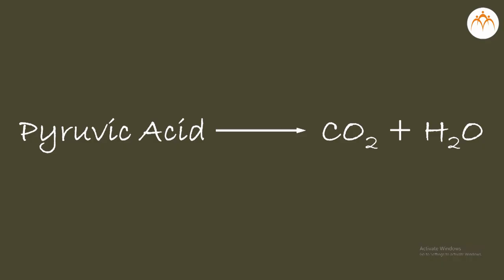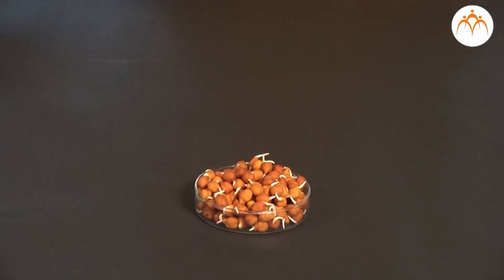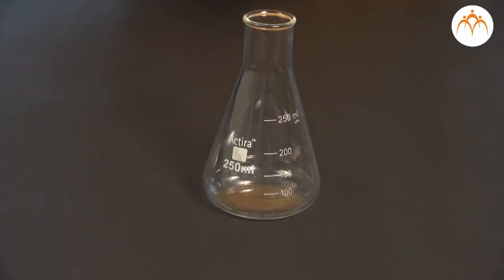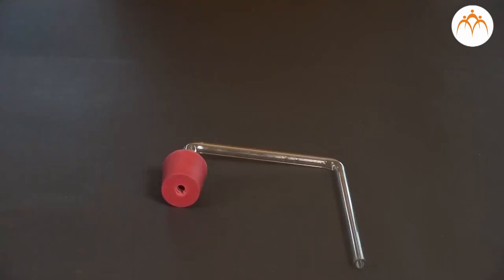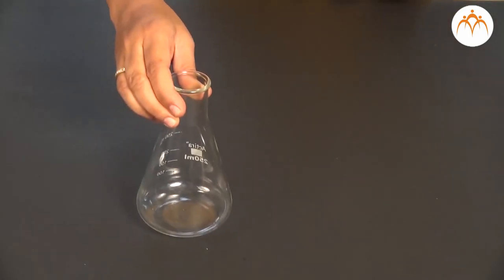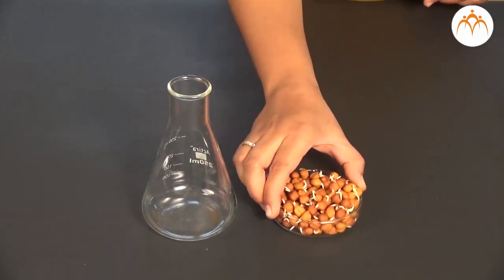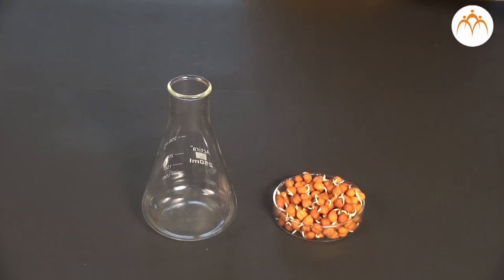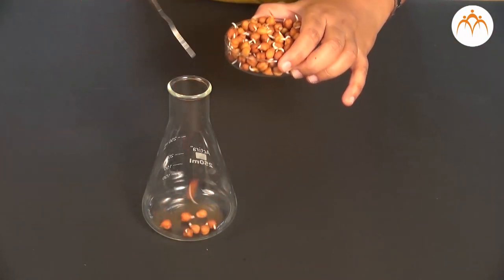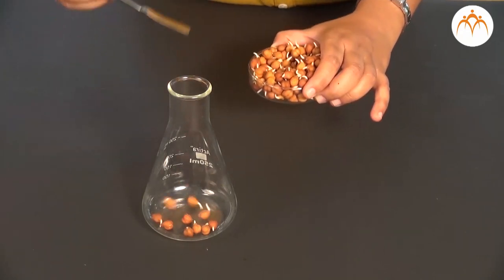In this practical, students have to confirm that the gas released during respiration is carbon dioxide. Requirements are sprouting seeds of moong, etc., water, cotton, conical flask, bent tube, rubber cork, and small test tube. Chemicals required: potassium hydroxide (KOH) pellets. Procedure: soak 25 to 30 seeds overnight in water, then keep them in wet cotton or cloth for some hours to sprout.